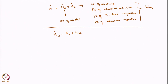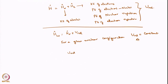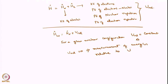For a given nuclear configuration, U_relative is equal to a constant. Since we can always measure energies with respect to some constant, we treat U_relative equal to zero. Therefore, H_nuclear equals H_internal.